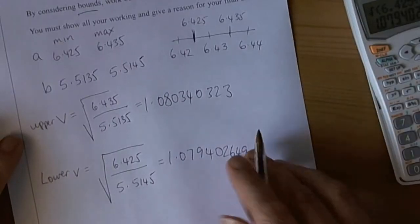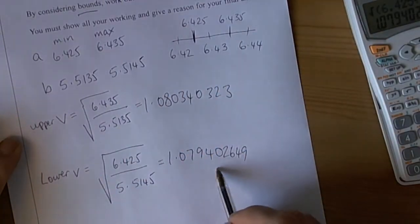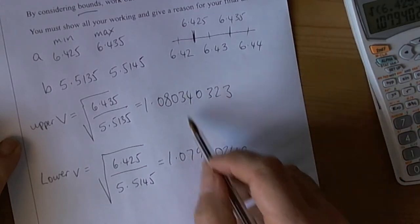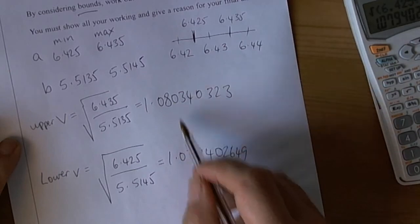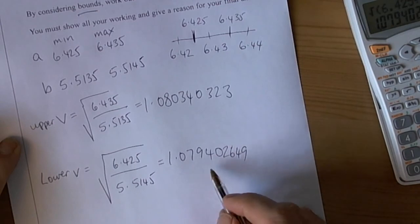Right, so we look at these two answers. The question asks us to consider bounds to work out a suitable value for V. Well, the reason this is an A-star question really is because it's asking you to look at the two numbers and round them down until they both agree.